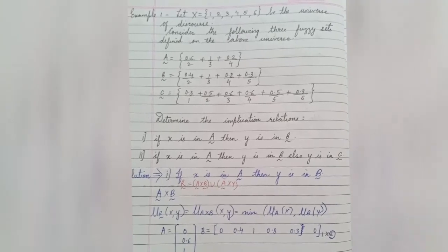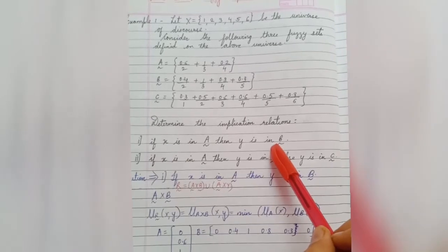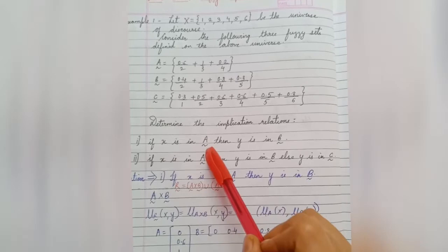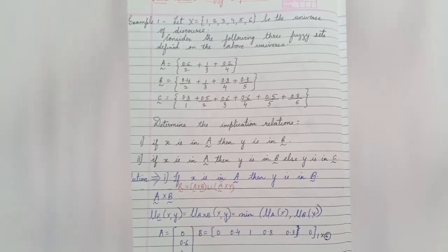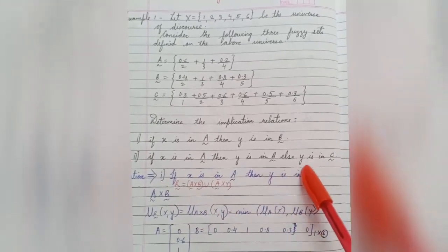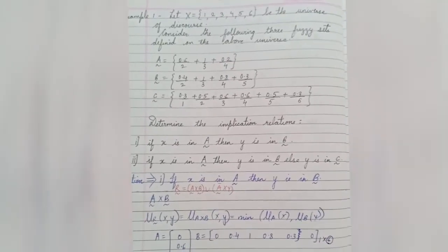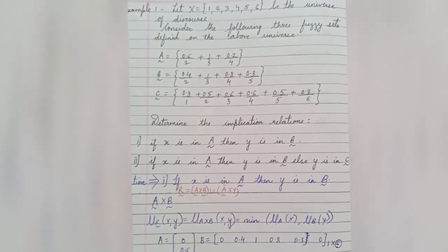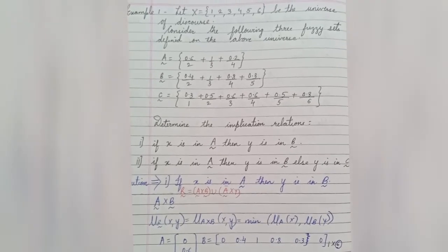This video covered a rule-based fuzzy implication example. We solved the first question — if X is in A then Y is in B — and the second part — if X is in A then Y is in B, else Y is in C. Stay tuned for upcoming videos, hit the like button, share with your friends, thank you for watching.